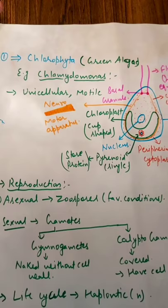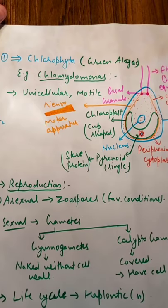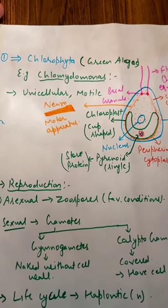So let's discuss the first division of the plant kingdom, that is chlorophyta. इसके different नाम हैं — chlorophyta बोलो, thallophyta बोलो, या algae बोलो, same thing। Chlorophyta क्यों? क्योंकि इनके अंदर abundant amount में chlorophyll present होता है, पूरा इनका green color होता है, कहीं से woody नहीं होता। That is why this is also known as chlorophyta — this is green algae.